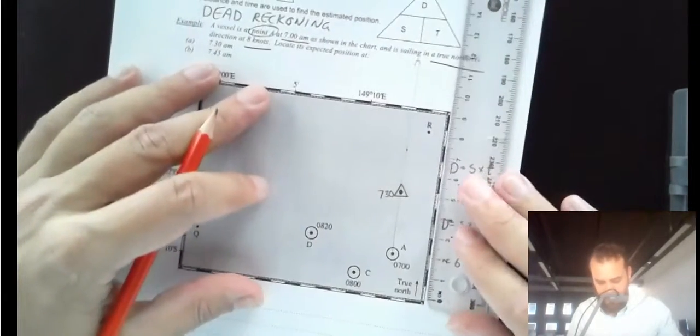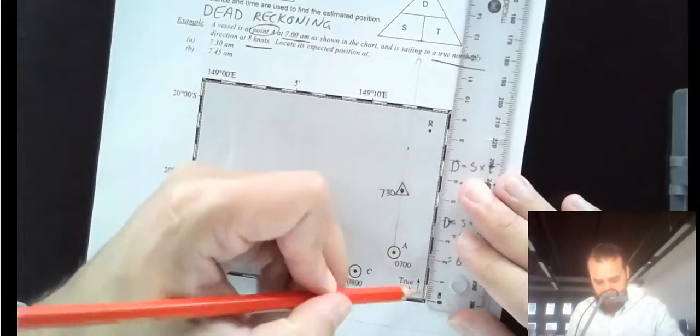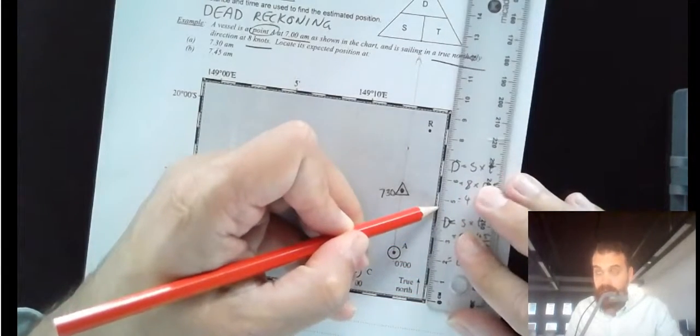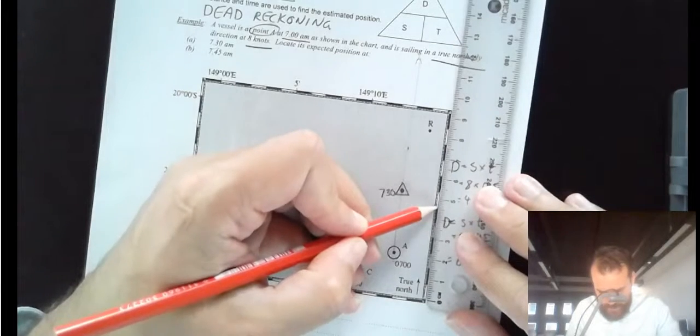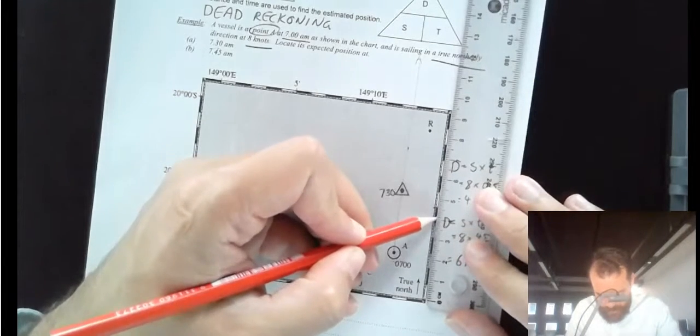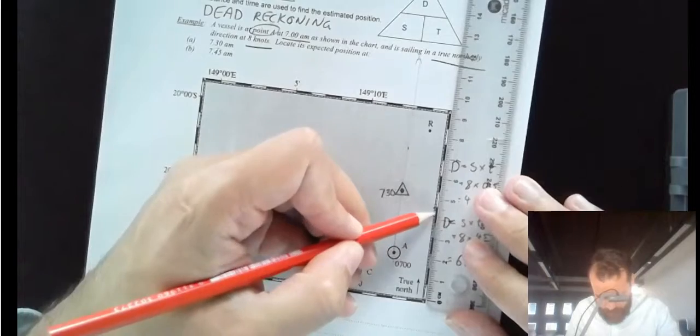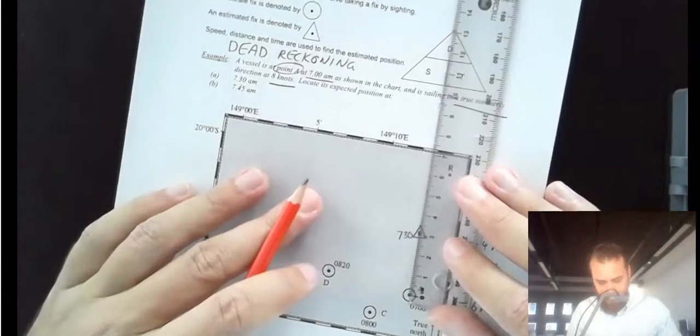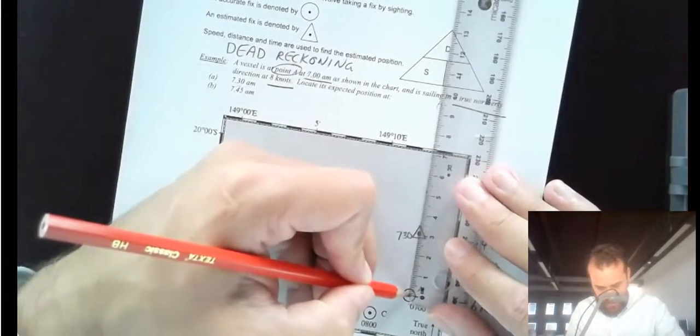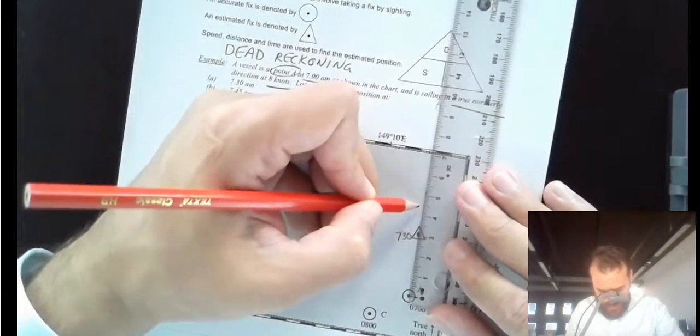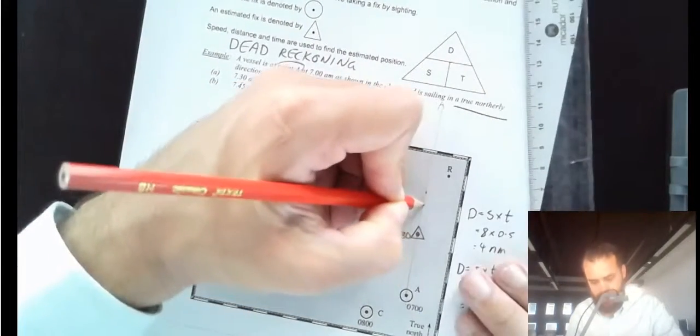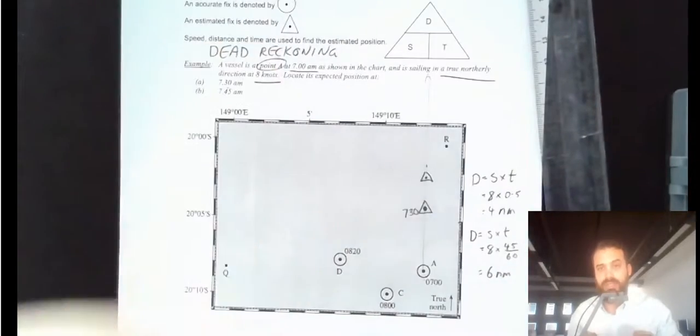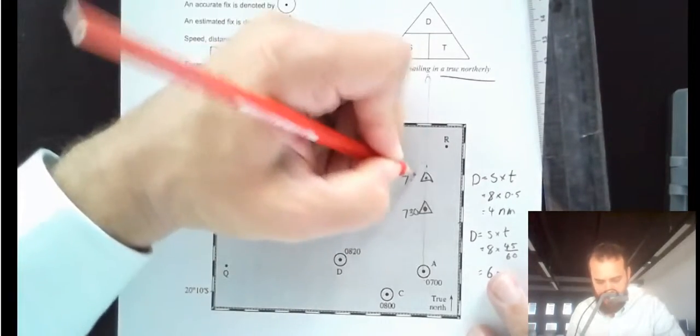I take my ruler again, and I measure up 1, 2, 3, 4, 5, 6. Now be really precise here. For 6 nautical miles, it looks like on this map it is 46 millimeters. And then come over here, measure up 46 millimeters. Here we are. Draw another triangle around that, because remember, it's just an estimate of our position. That's 7:45.